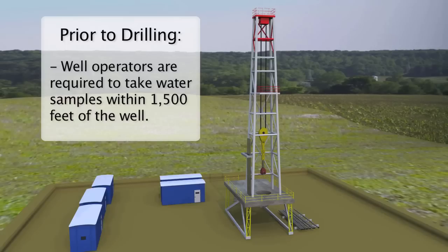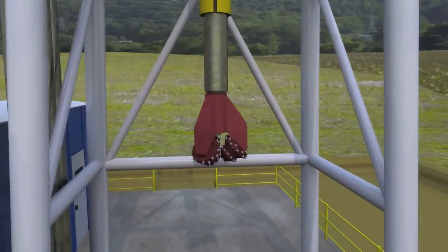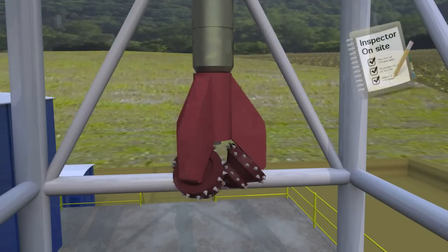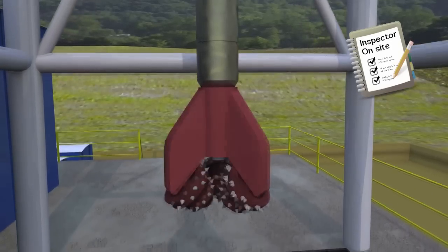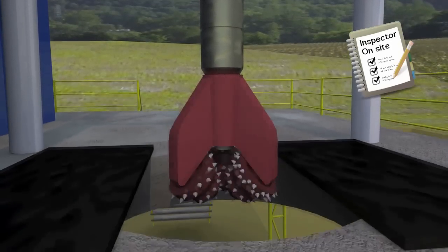Once the operator has met the required permitting and site construction rules and regulations, drilling can begin. An ODNR inspector is on-site to witness the start of the drilling process.